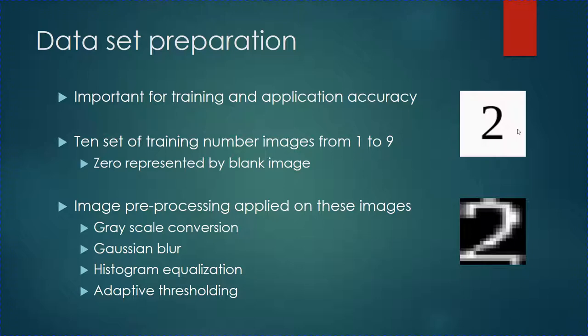The preprocessing stage consists of four steps: RGB image to grayscale conversion, Gaussian blur to eliminate noise, histogram equalization, and adaptive thresholding. The end result is a binary image — this is what the image looks like after preprocessing.